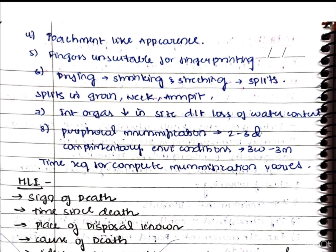Internal organs also decrease in size due to loss of water content. Peripheral mummification — of the hands and feet — takes place within two to three days. With complementary environmental conditions, the complete process can occur between three weeks and three months; the exact time varies based on factors like high temperature and low humidity.